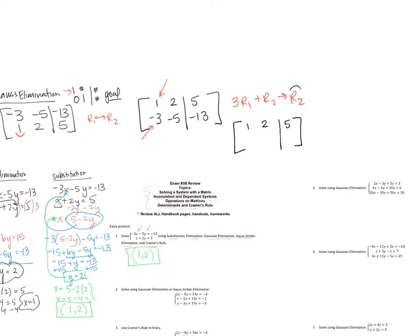My scratch work: 3 times row 1 gives 3, 6, 15. Adding row 2 (negative 3, negative 5, negative 13) gives new row 2: 0, 1, 2.